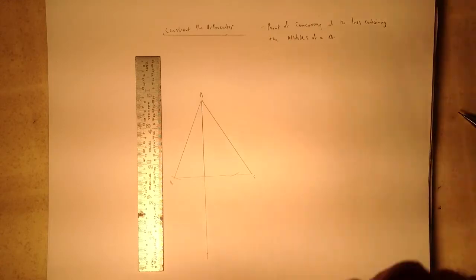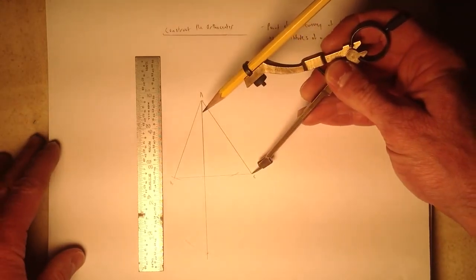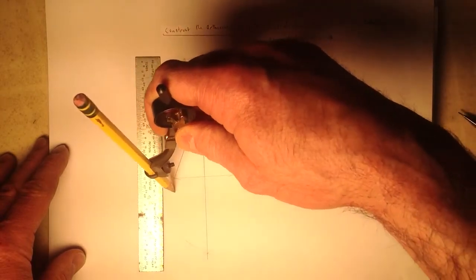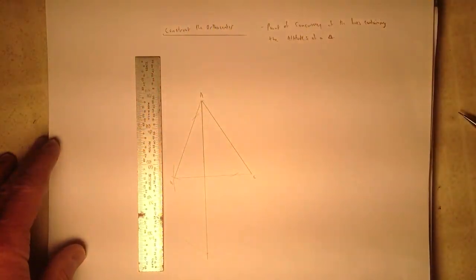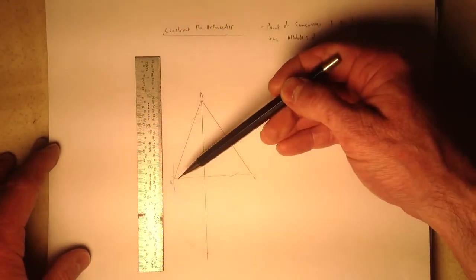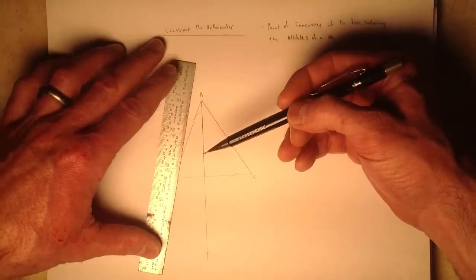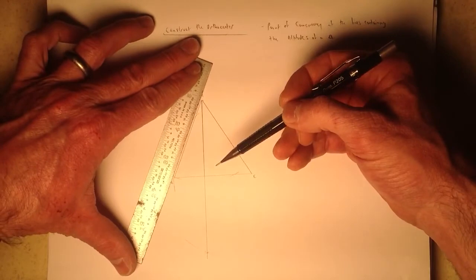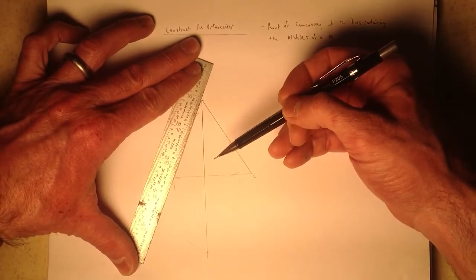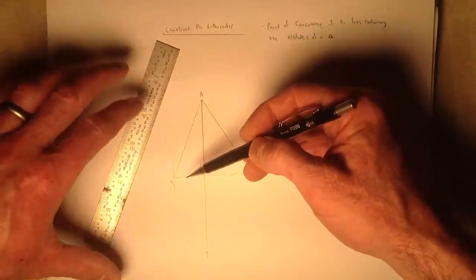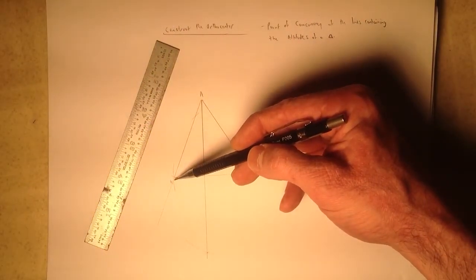Now we'll repeat the process at vertex C, and when I do so, my only concern is with respect to side AB on the other side over here. You'll notice that as I drew this arc over here, it missed segment AB. In order to construct the altitude correctly, I'm going to extend side AB so that it actually intersects that second arc I made.